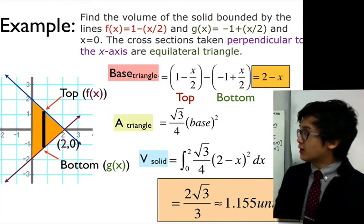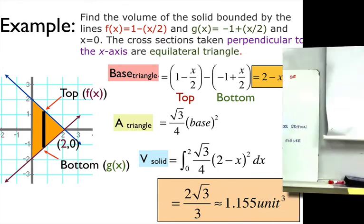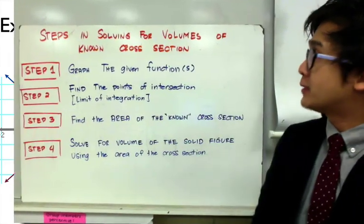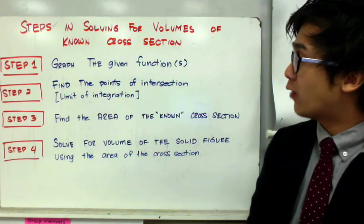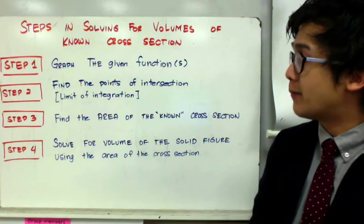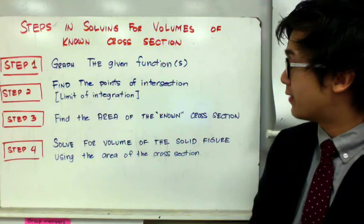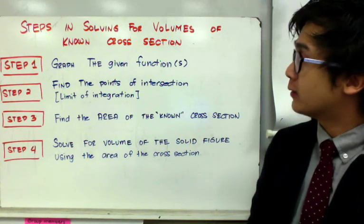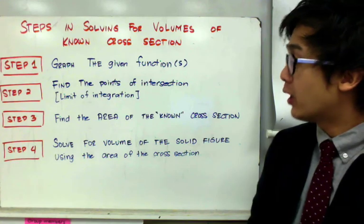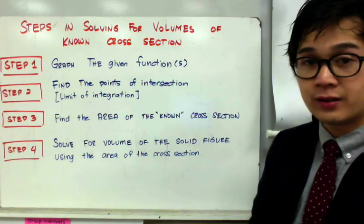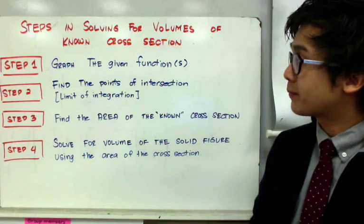Here is the summary of the steps for solving volumes with known cross-sections. Step 1: always graph the given function to visualize the problem. Step 2: find the points of intersection to determine the limits of integration. Step 3: find the area of the known cross-section from your graph. Step 4: solve for the volume by integrating the area of the cross-section over the limits.